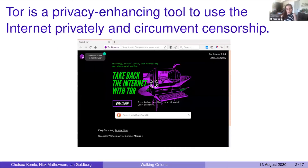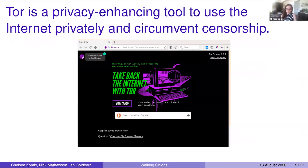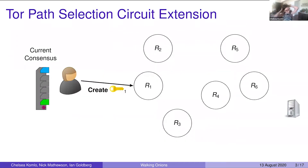Our work uses TOR as a case study. TOR is a privacy-enhancing tool that allows millions of users around the world to use the internet privately and to circumvent censorship. In order to access information from a server, a user will create a path through the network in order to route their traffic.